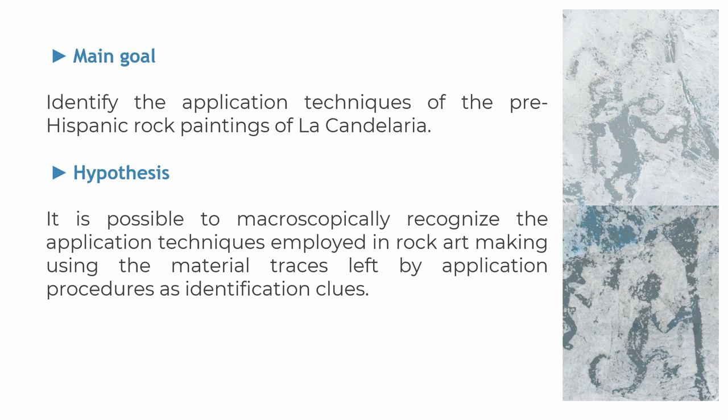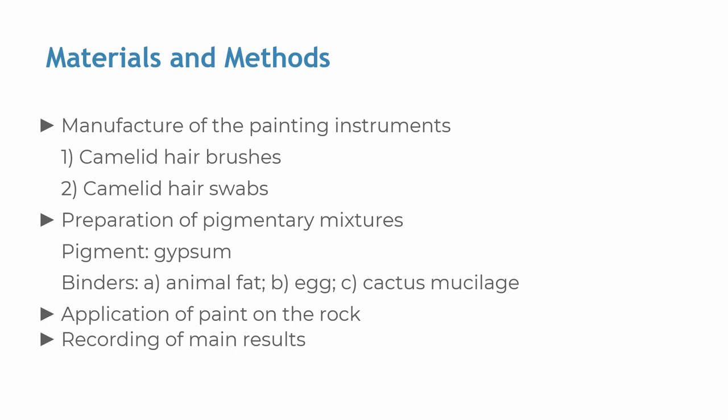Starting from the hypothesis that each application technique leaves specific material traces, we have developed an experimental approach to four application techniques in order to detect and document the specific material traces left by each one. To test our hypothesis, we designed an experimental plan focused on rock art painting techniques. Experimental archaeology will allow us to better comprehend the material traces microscopically observed. Mock-ups were made to analyze the emerging traces and compare them with those present in the archaeological record.